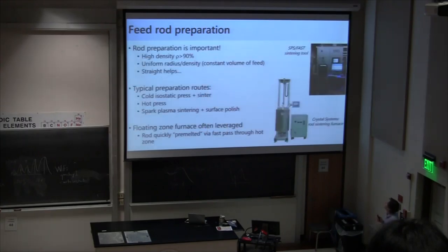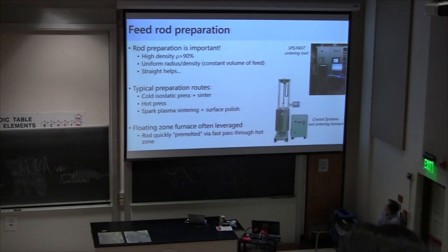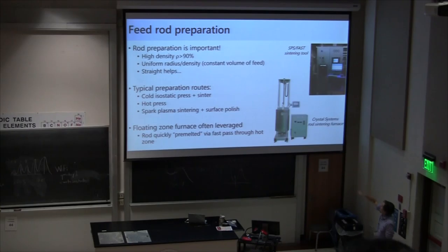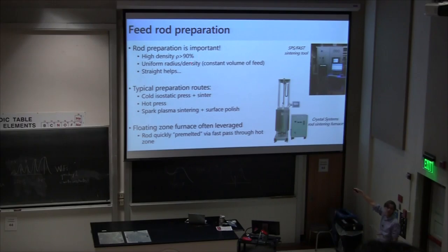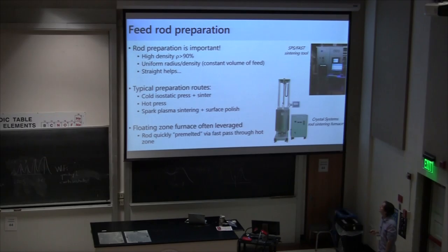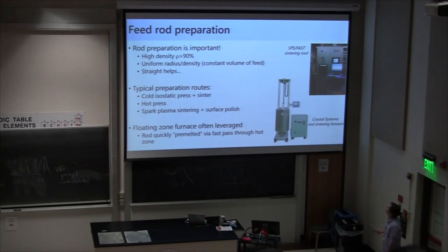A big part of floating zone growth is the preparation of the feed rod. It's actually one of the more subtle and insidious aspects because it controls a lot of your potential for success. You actually have to make these feed rods in high density and reasonably uniform — an aspirational goal of greater than 90% of theoretical density. If you just mix powder, you get something like 50 to 60% density, so you really need to densify the material to avoid air and other inclusions in your melt.